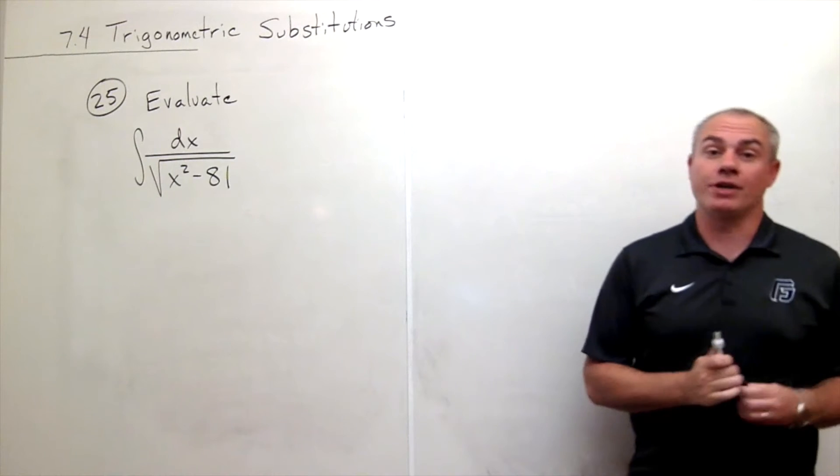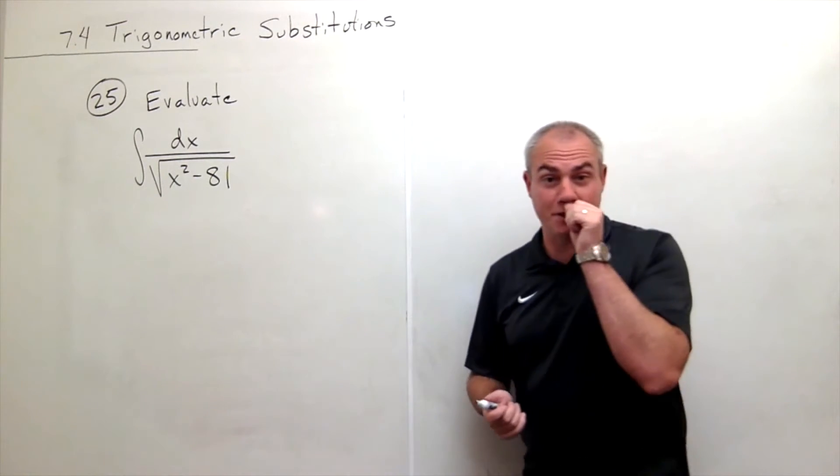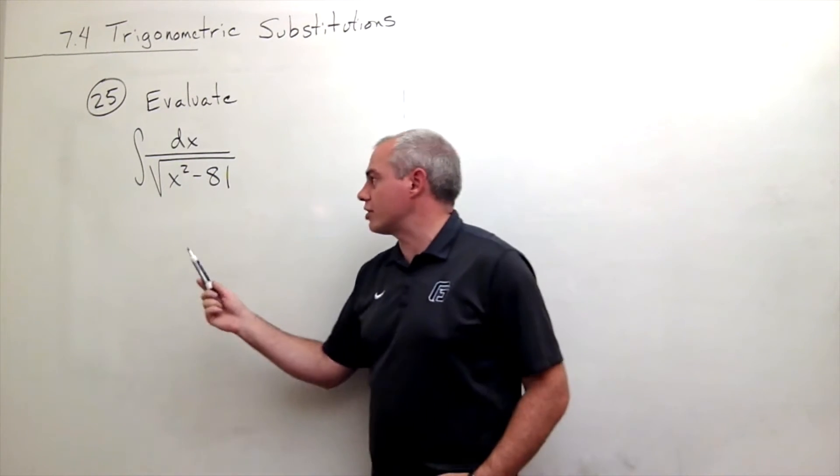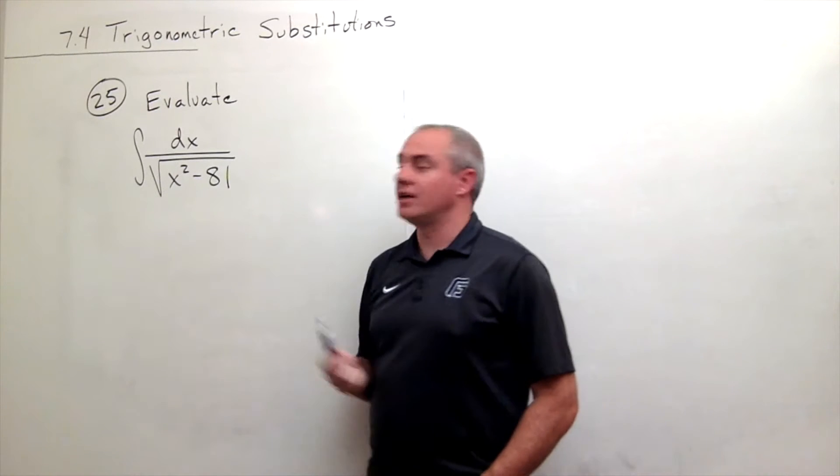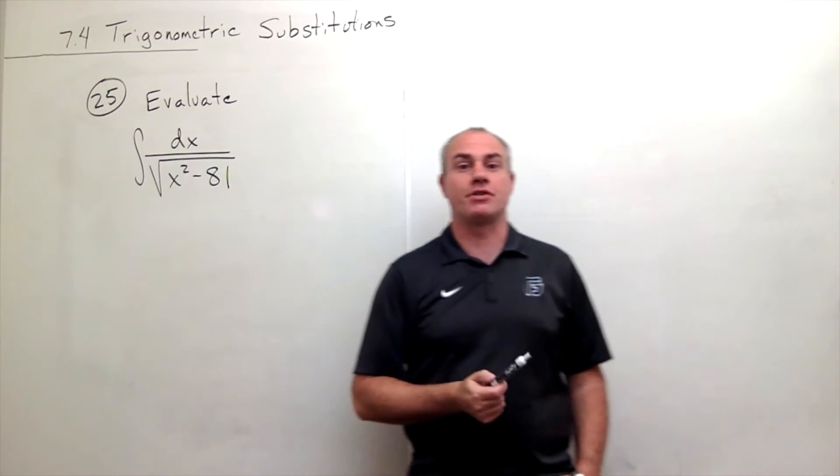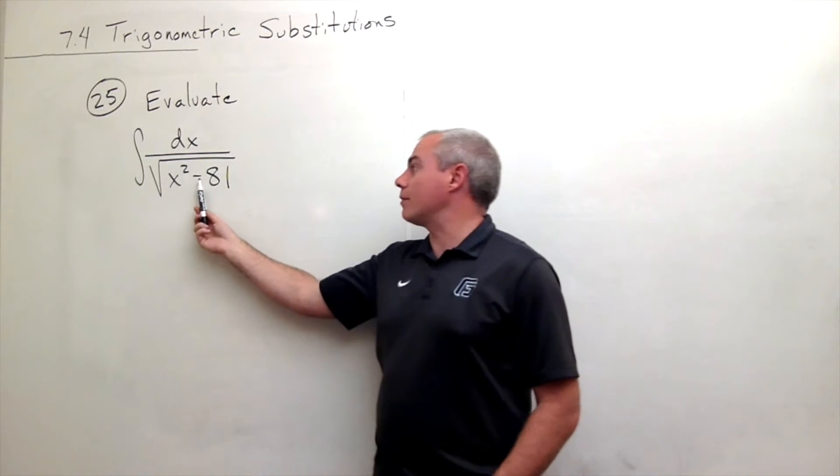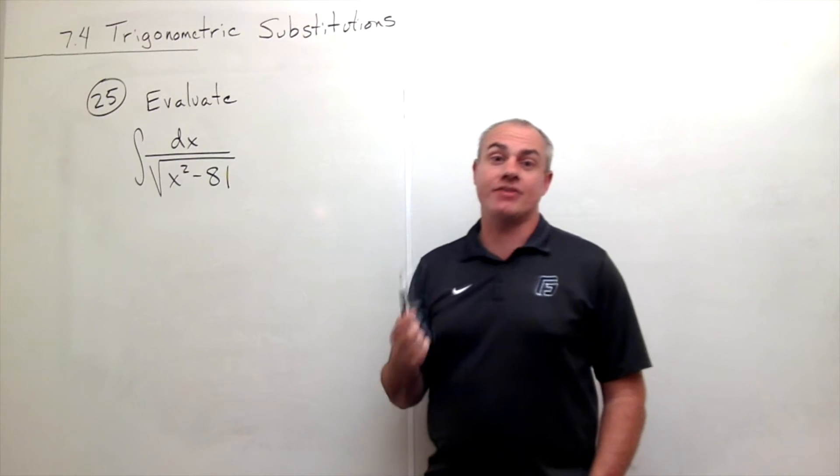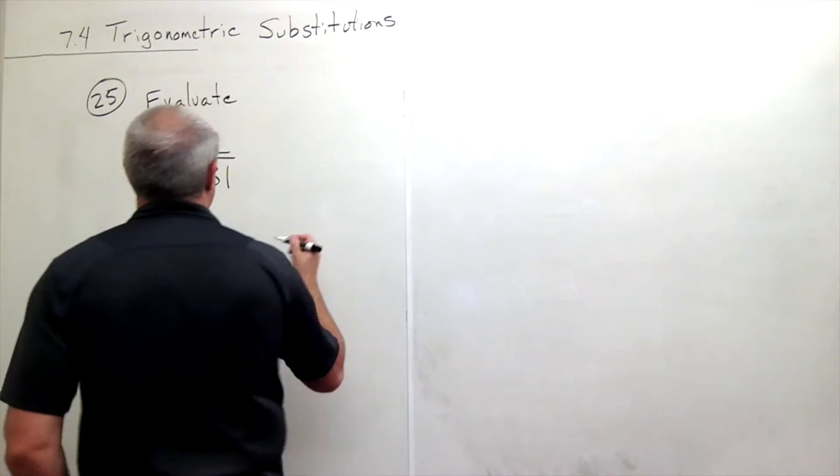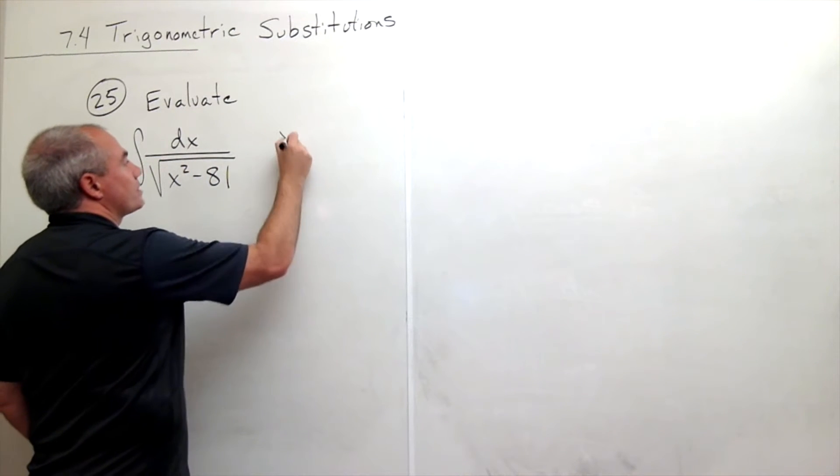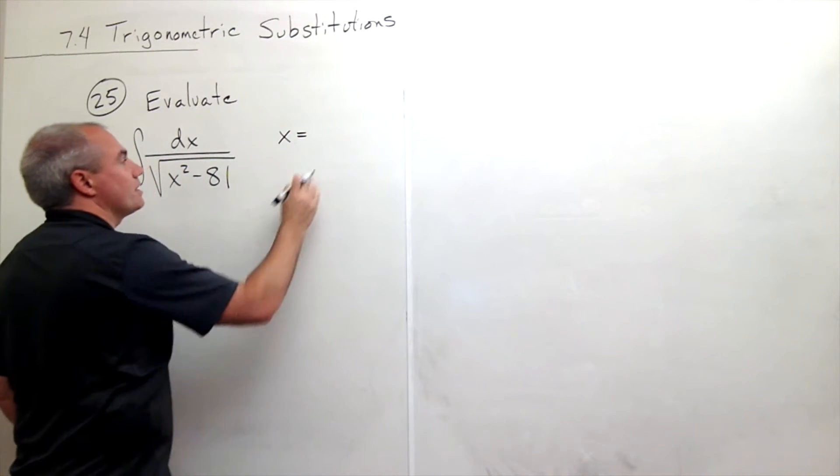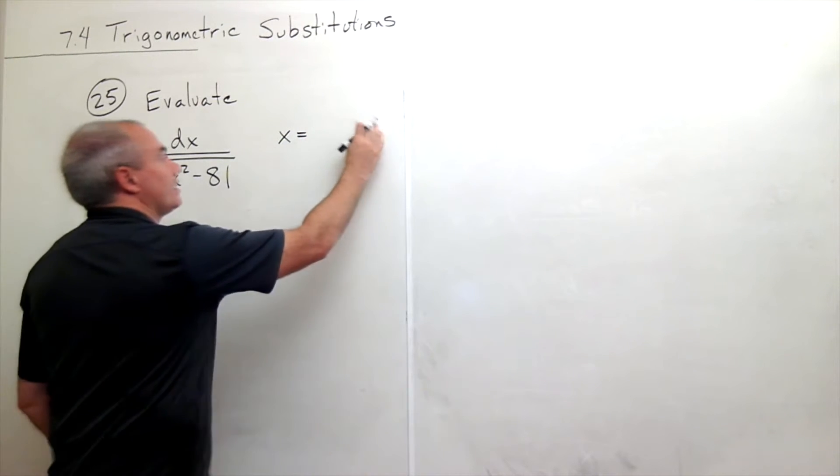We know we're going to use a trigonometric substitution, so the first thing to ask is: what form does this have? In this case, it has the form x squared minus a squared. This tells me I need to make the substitution x equals a secant theta.